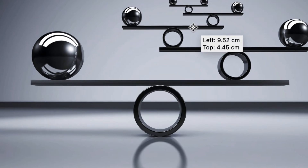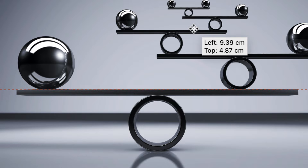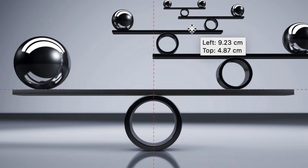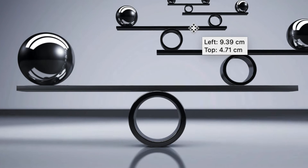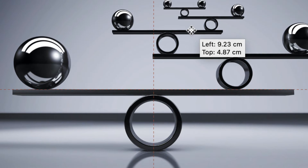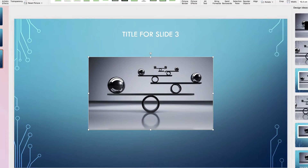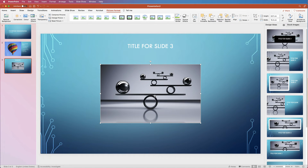As you move the image, it will snap to the center — you can see those guide bars appearing. Moving it up and down will also click it into position so it's perfectly centered.